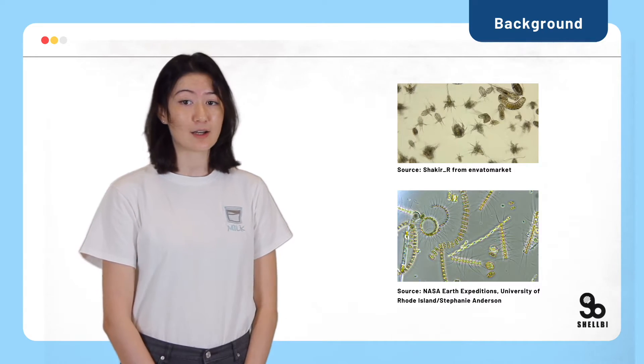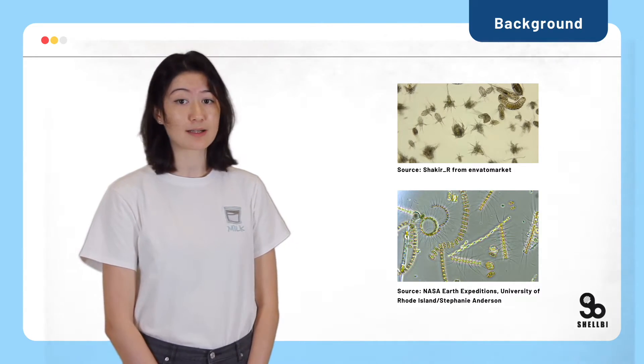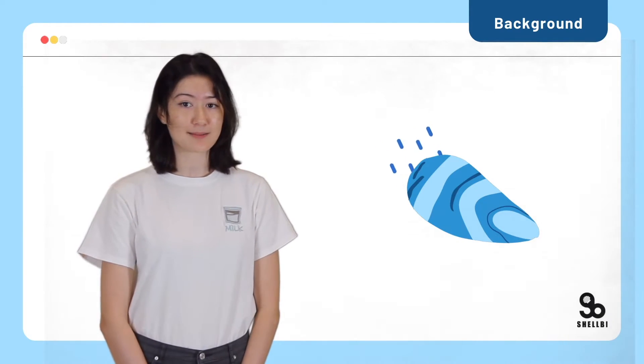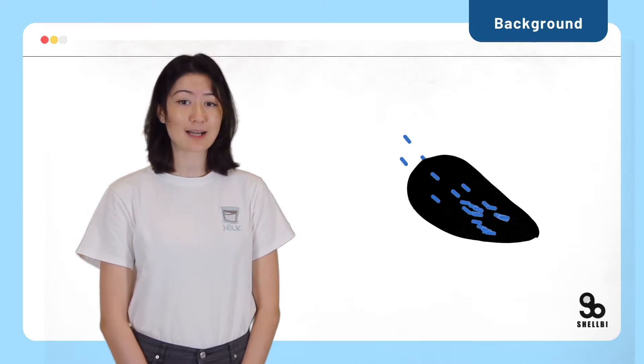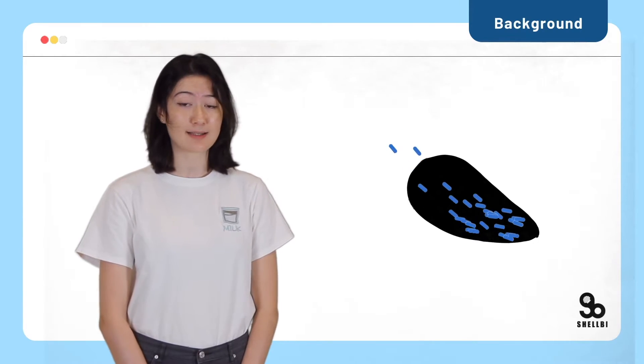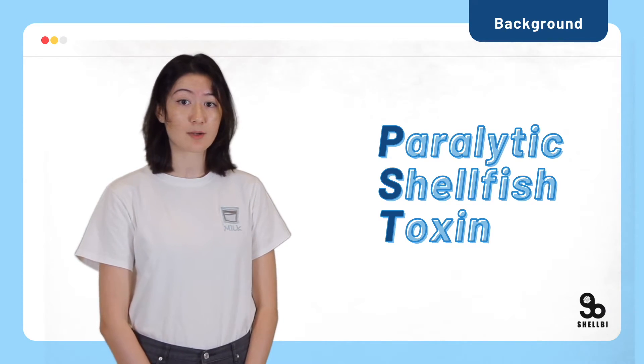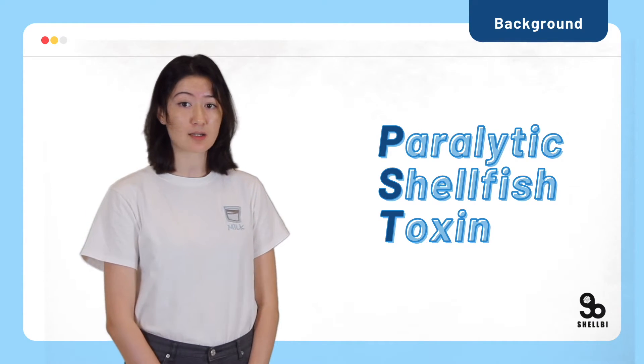As they consume plankton, they also take up organisms that can produce life-threatening toxins, not for the shellfish itself, but for the animals that consume it. Many shellfish can accumulate toxins as waste or defense mechanisms for up to two years. There are different types of shellfish toxins. As paralytic shellfish toxins, or PST for short, are the most common yet the most deadly, we decided to focus on these specific toxins for our project.